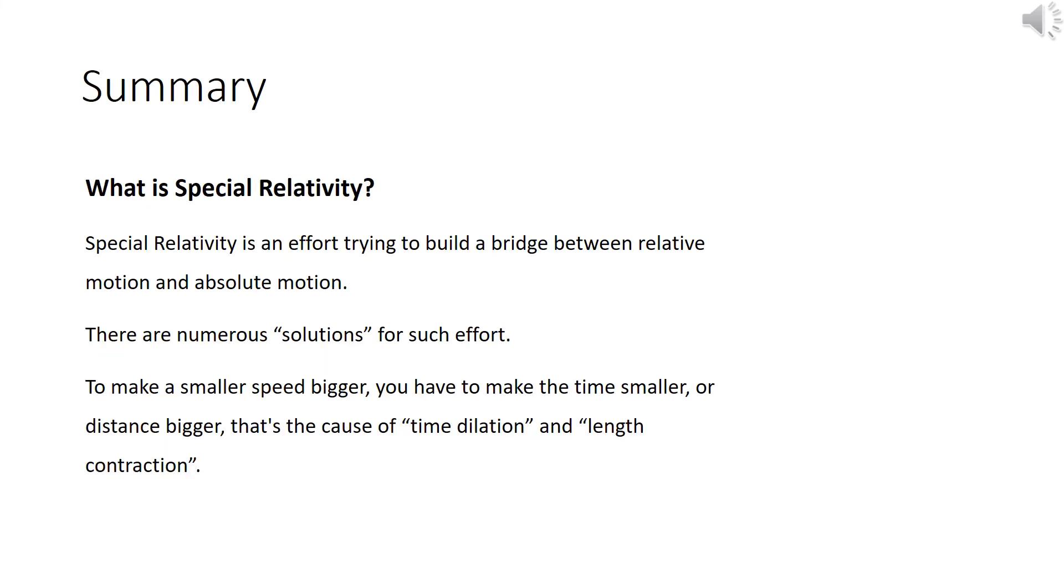Here is a summary for this section that we just covered. What is special relativity? Special relativity is an effort trying to build a bridge between relative motion and absolute motion. There are numerous solutions for each effort. To make a smaller speed bigger, you have to make the time smaller or distance bigger. That's the cause of time dilation and length contraction.